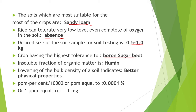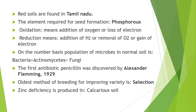Next point is, the desired size of soil sample for soil testing is 0.5 to 1.0 kg. The crop having the highest tolerance to boron is sugar beet. The insoluble fraction of organic matter is humine. Lowering of bulk density of soil indicates better physical properties. Next point is, the element required for seed formation is phosphorus.